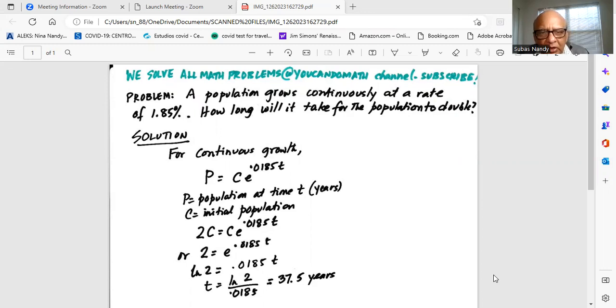So for the continuous growth, we have P, the population size at any point of time is C times E. E is the natural number. Exponent is 0.0185T. That is the formula for continuous growth with a 1.85% annual growth.